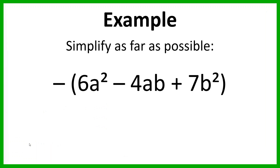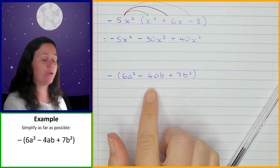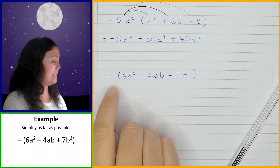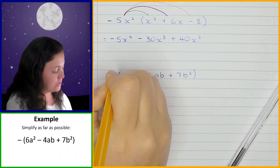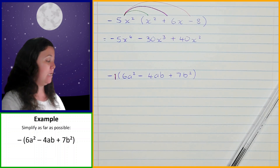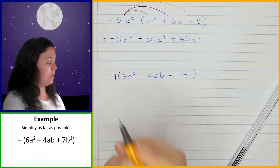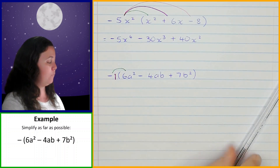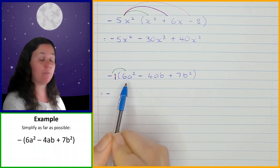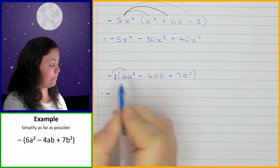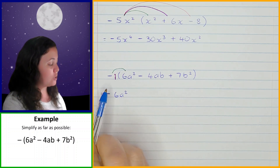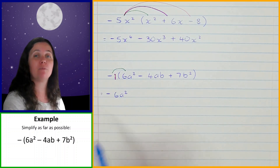In this next example, we've got negative, then in brackets, 6a squared minus 4ab plus 7b squared. When you've just got a minus sign in front of your brackets, it's actually negative 1 in front of the bracket. So I'm going to put a 1 there — it's negative 1 that I'm multiplying in. Negative 1 times 6a squared is negative, because negative times positive is negative, but multiplying by 1 keeps it the same, so the 6a squared changes from positive to negative.